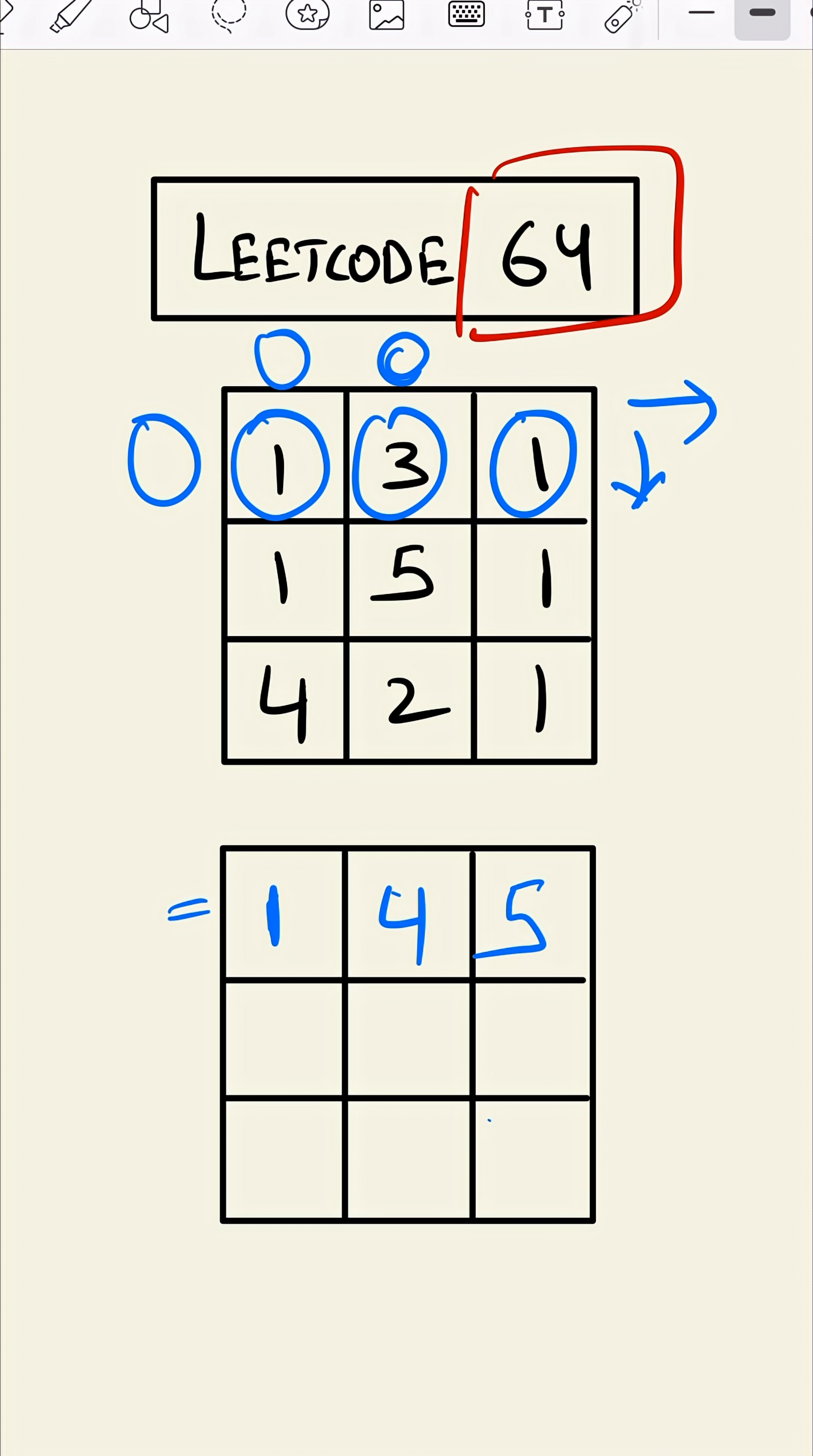Now for this value, the minimum of top which is one here, and since there is nothing here, it will be two. One plus one equals two. Similarly for this, four plus two equals six here.